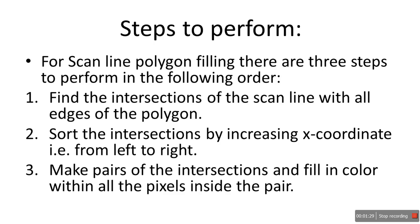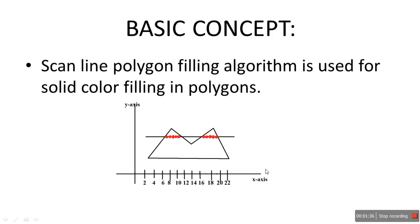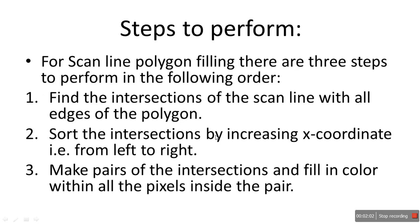The third step: make pairs of the intersections and fill in color within all the pixels inside each pair. So we'll make pairs — first pair is 6 and 12, and inside this pair we fill all the pixel positions with color. The next pair is 16 and 20, so all the pixels that lie within 16 and 20 we fill with color. That is the third and final step.